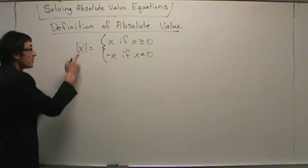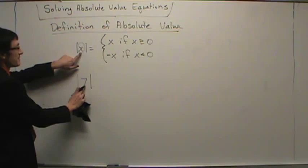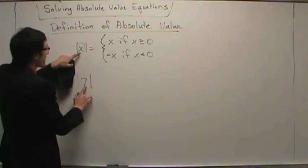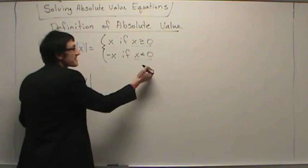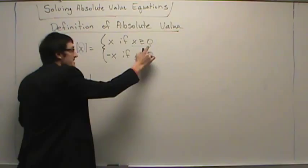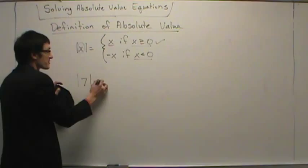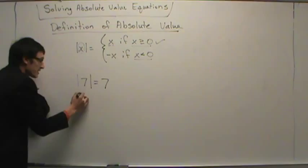Let's try putting a number in for x. If we define x to be seven, we look at the definition. There are two conditions: x is greater than or equal to zero, or x is less than zero — x is positive or x is negative. Seven is positive, so we're in the first case. Therefore, we just leave it alone and write seven. If x is positive, leave it alone and just write x.